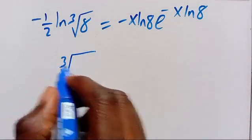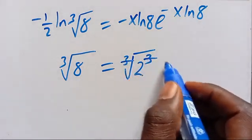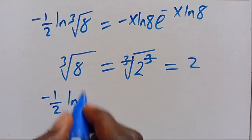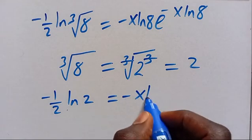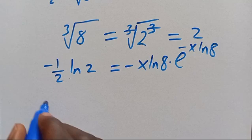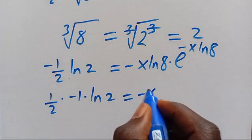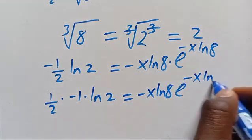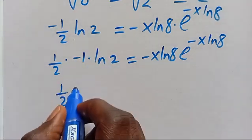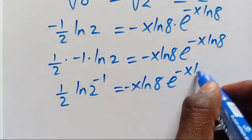Recall that the cube root of 8 equals 2, since the cube root of 2 cubed gives us 8. So from here we have minus 1 divided by 2 times ln(2) equals minus x times ln(8) times e to the power of minus x times ln(8). We can also write this as 1 over 2 times minus 1 times ln(2) to the power of minus 1, equals minus x times ln(8) times e to the power of minus x times ln(8).